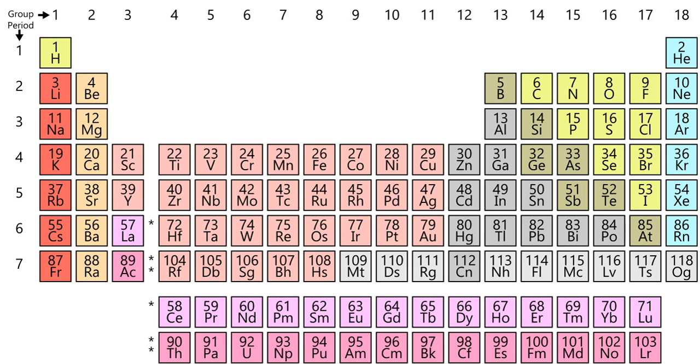Period 2 elements involve the 2s and 2p orbitals. They include the biologically most essential elements besides hydrogen: carbon, nitrogen, and oxygen.